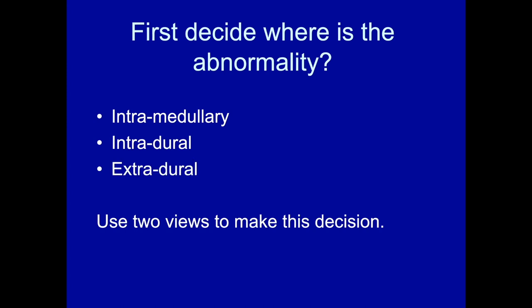The most common compartment where we see disease is extradural disease — patients with cervical disc herniation, thoracic disc herniation, spine metastatic disease, or spine burst fracture. You generally need two views to make this decision, because a sagittal view alone can make it very difficult to distinguish an expanded cord from one compressed side to side, for example in a patient with neurofibromatosis type one with bilateral large nerve sheath tumors. In radiology, one view is no view.